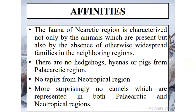There are some affinities of the Nearctic region with other regions. The character of a region is defined not only by the species present but also by what is absent. For example, there is no hedgehog and no guinea pig from the Palearctic region. There is no tapir from the Neotropical region. More surprisingly, there are no camels, which are represented in both the Palearctic and Neotropical regions, present in the Nearctic region.